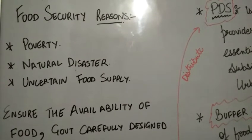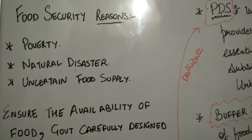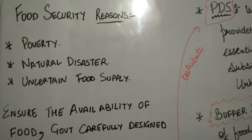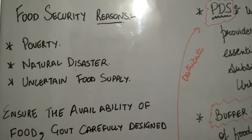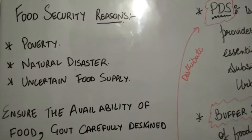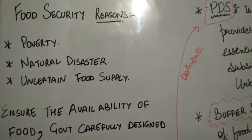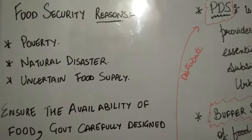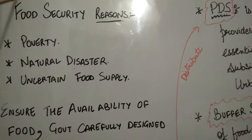There may also be uncertain food supply in the market — food supply chains can be disrupted due to any reason, such as transportation issues or speculation by traders. So there are several reasons which lead to the food security problem.